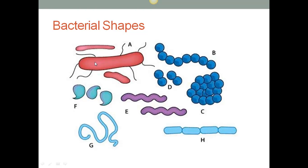Bacteria are the most abundant of all organisms. They are the smallest organisms that contain all the biochemical machinery necessary to sustain life and allow for reproduction. Bacteria have an average size of one micrometer to ten micrometers. Bacteria are grouped by three classic shapes.